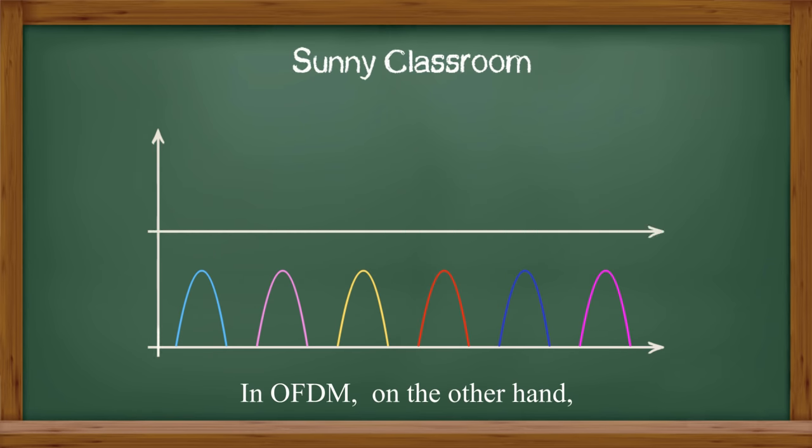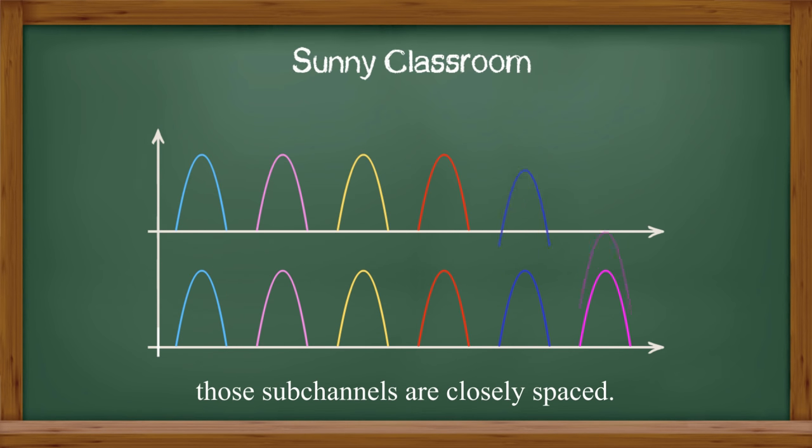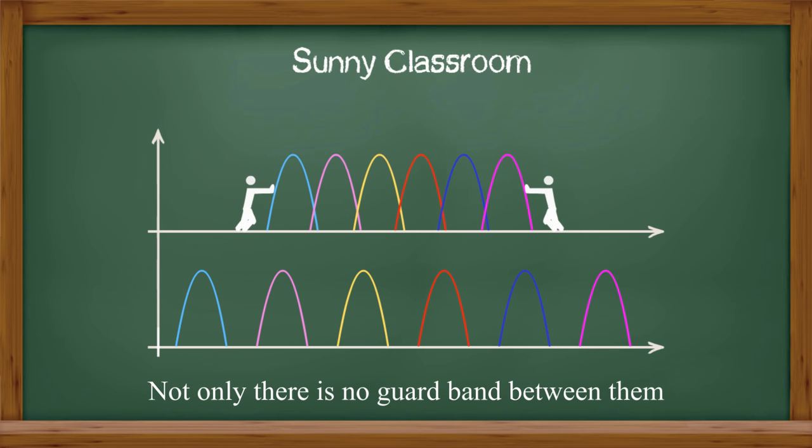In OFDM, on the other hand, those subchannels are closely spaced. Not only there is no guard band between them, but actually they are overlapped.